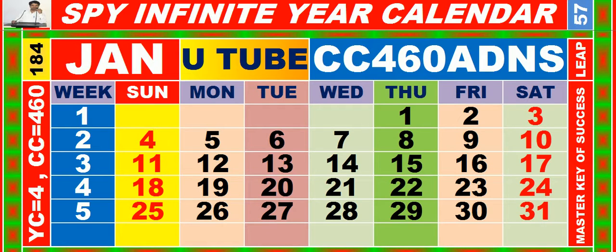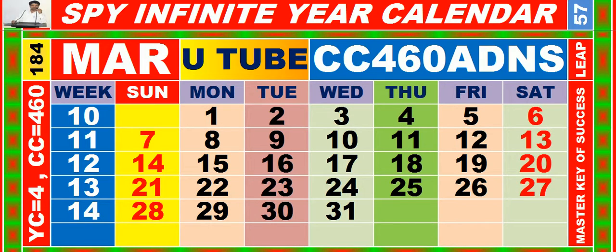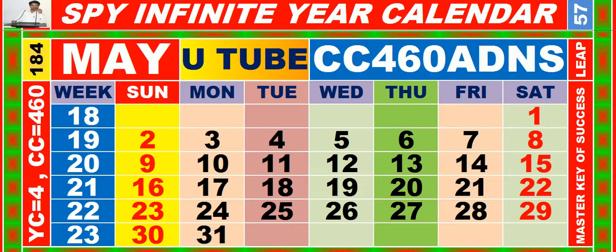Calendar for the month of January having calendar code equal to 4-6-0-ADNS. Calendar for the month of February having calendar code equal to 4-6-0. Calendar for the month of March having calendar code equal to 4-6-0. Calendar for the month of April having calendar code equal to 4-6-0. Calendar for the month of May having calendar code equal to 4-6-0.